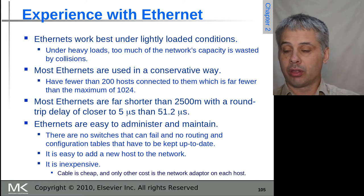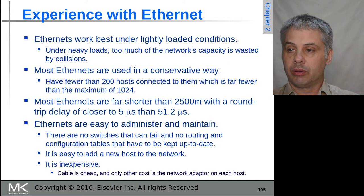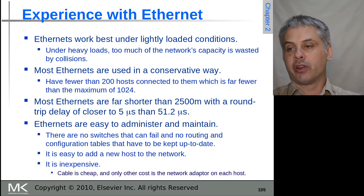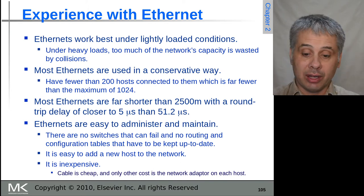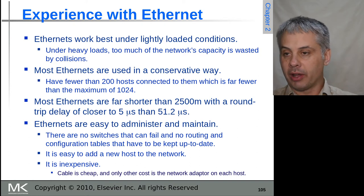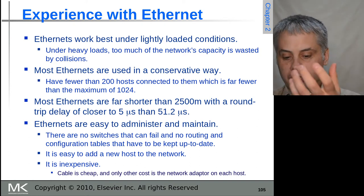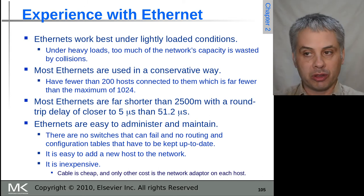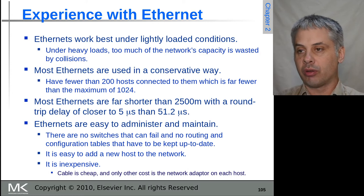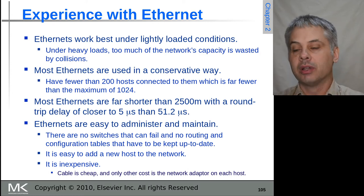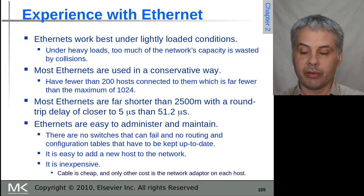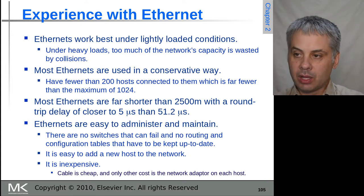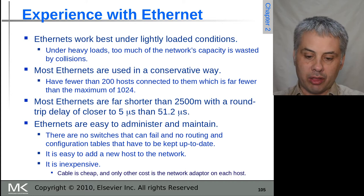This is why things like Token Ring were used and promoted because they didn't have this collision problem. The token was like having a conch that you pass around in a group discussion - only the person with the ball can talk. The Token Ring token was used the same way to stop collisions of conversation on the network.